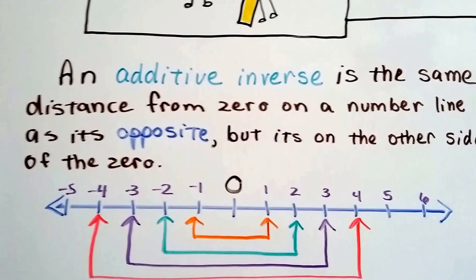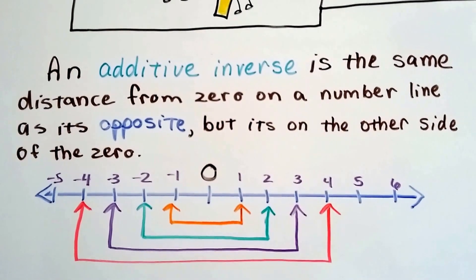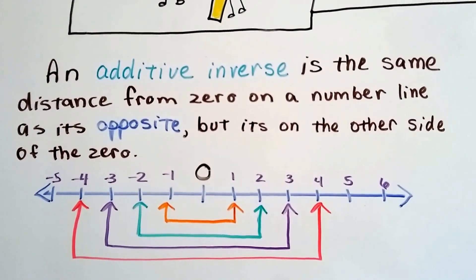An additive inverse is the same distance from zero on a number line as its opposite, but it's on the other side of the zero.